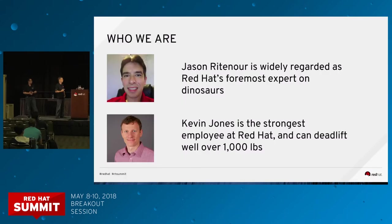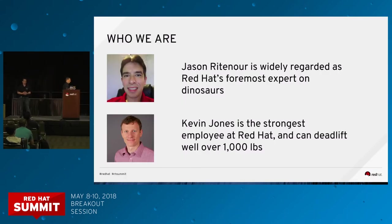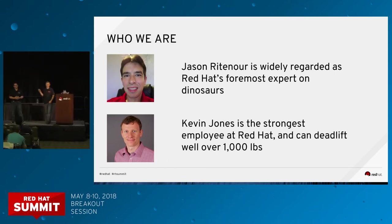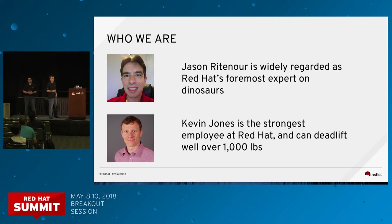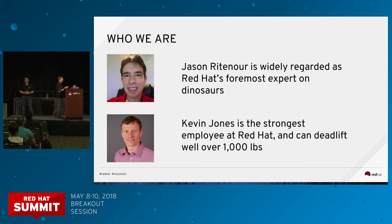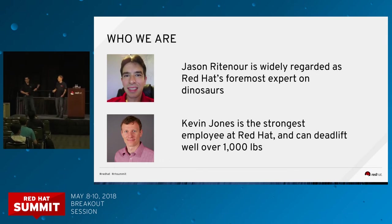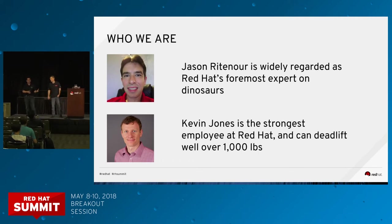So today what we're going to talk about — we just wanted to tell you a little bit about ourselves. Jason is wildly known inside of Red Hat as the foremost expert on dinosaurs, and he uses CloudForms and Ansible to automate the publishing of his research internally. And Kevin Jones is the physically strongest employee at Red Hat — he literally carries around a data center everywhere he goes. You might have seen it down in the Ecosystem Expo today. He carries it everywhere. I feel naked without my cloud.